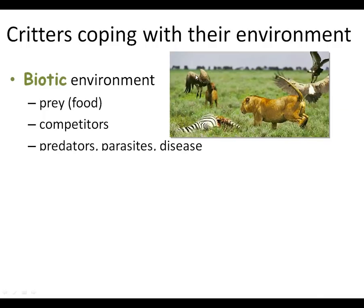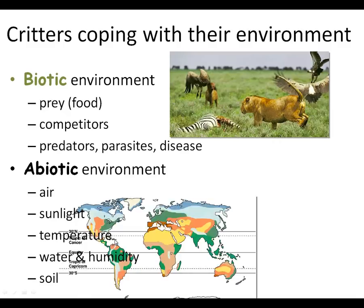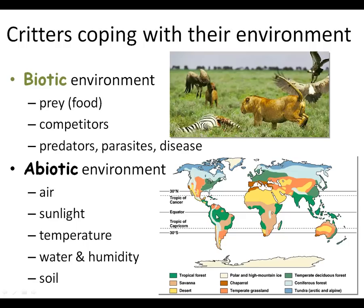Predator, prey, competition — it all works in your favor or against you. Then we have to talk about the abiotic — the non-living things — like air, sunlight, temperature, water, humidity, soil. They give you the climate belts that are actually out there. You can see we have dry climates, wet climates, mountainous climates, polar climates, tropical climates — all different types of climates out there.